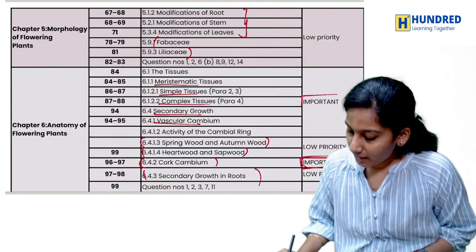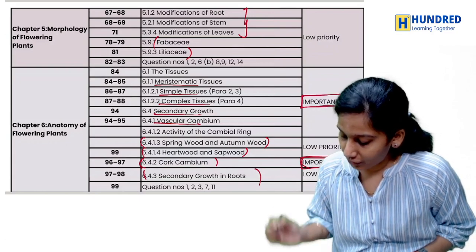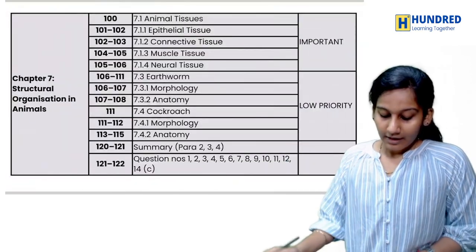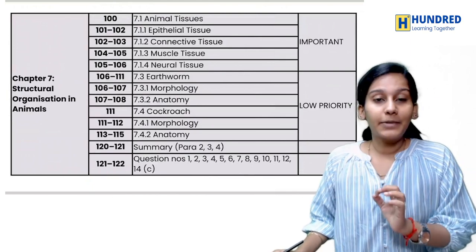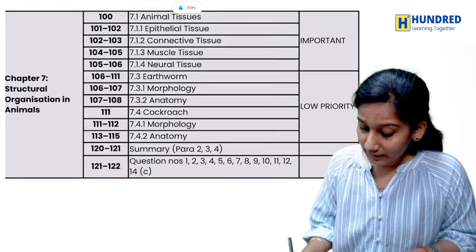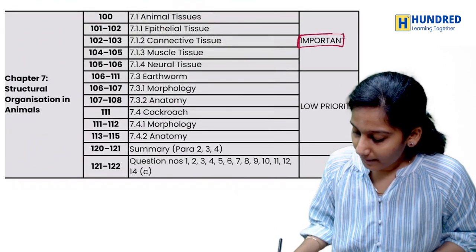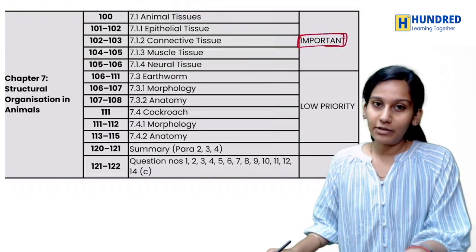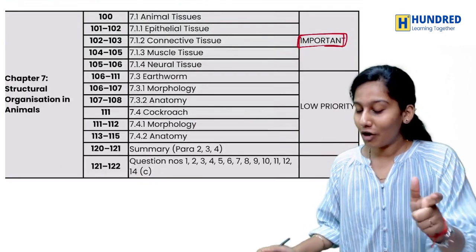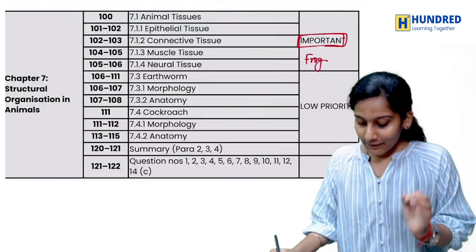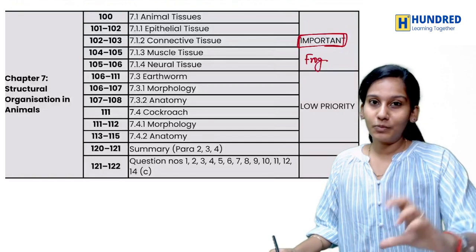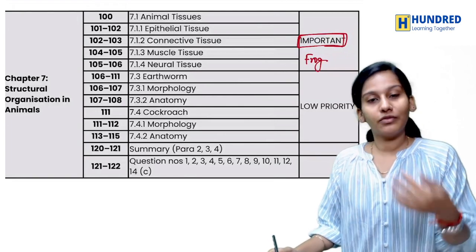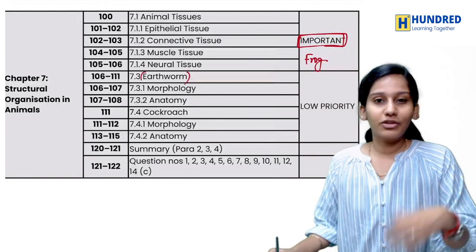Make sure you don't skip the important topics — learn those. Next, Structural Organization in Animals: the first part on animal tissue — epithelial and muscular tissue — is important. The low priority parts are Earthworm and Cockroach morphology and anatomy, which you can remove. Frog, however, you have to definitely read. The important part is the tissue section starting with epithelial and connective tissue. Morphology and anatomy of cockroach and earthworm are low priority.